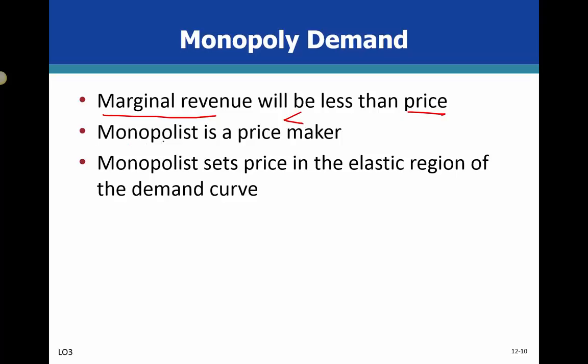So marginal revenue is less than price. The monopolist is still a price maker, but they're a slave to demand — they can produce as much or as little as they want, but there's still a market demand curve connecting price and quantity. If they out-price the market, not many people will demand. The monopolist sets the price, and that price is inextricably connected to quantity through the law of demand.